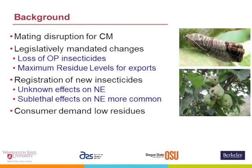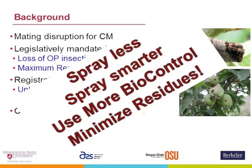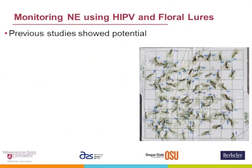The background here can be skipped because Nick Mills did this, and the truth is that really what people want us to do is to spray less, spray smarter, use biocontrol, and have no residues at the end of the season. What we've been trying to do in our specialty crop research initiative grant is to first figure out what some of these problems are. One of the problems is we need to have ways to monitor natural enemies.